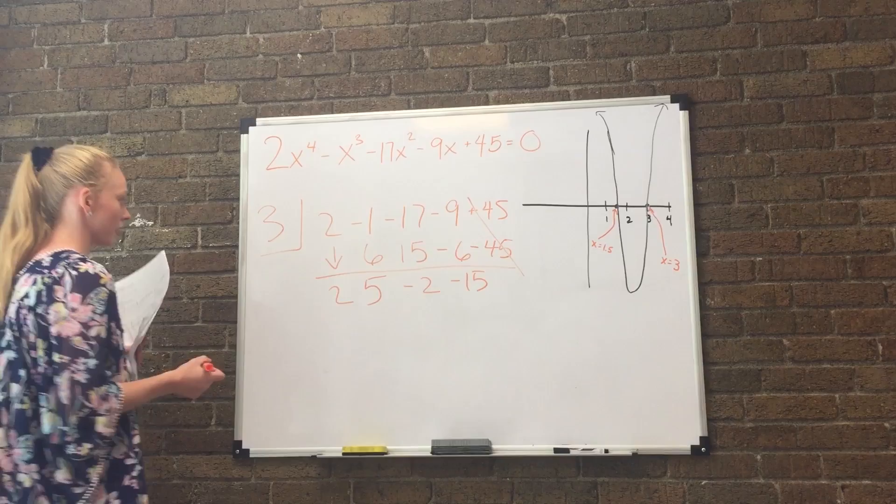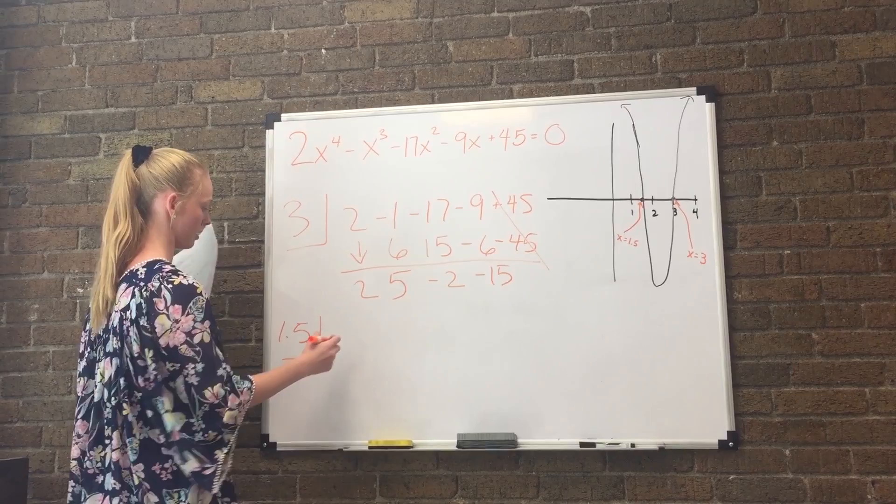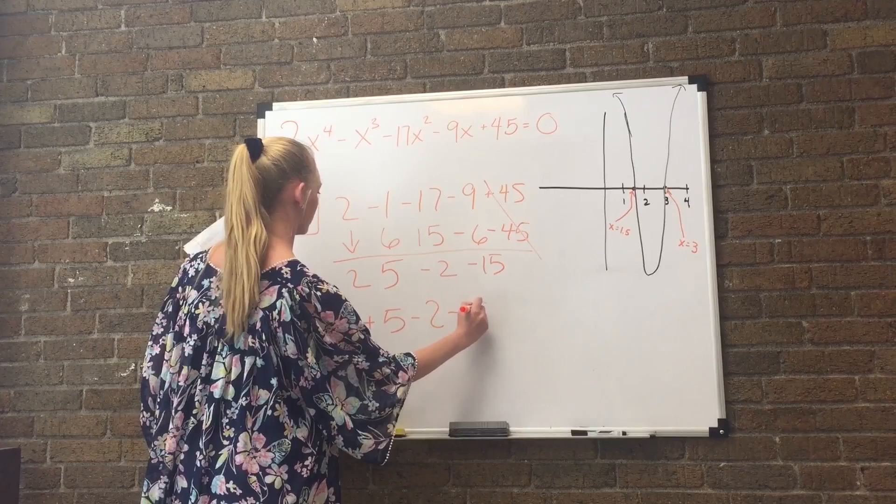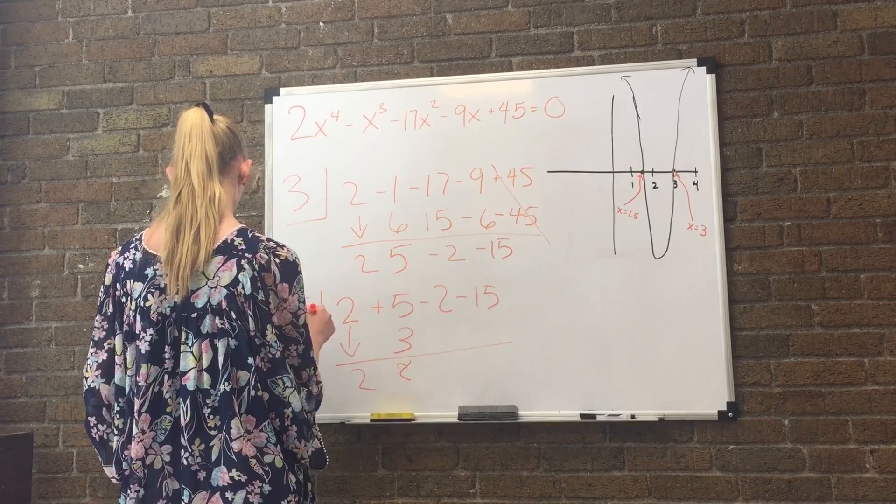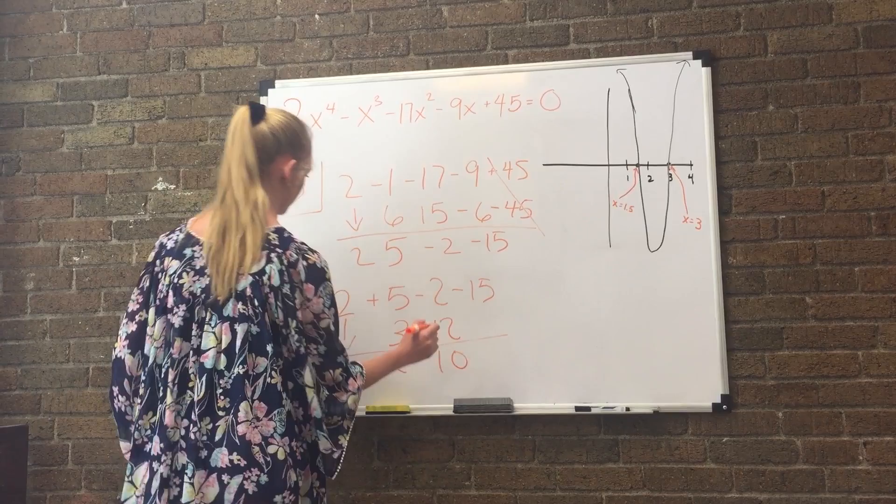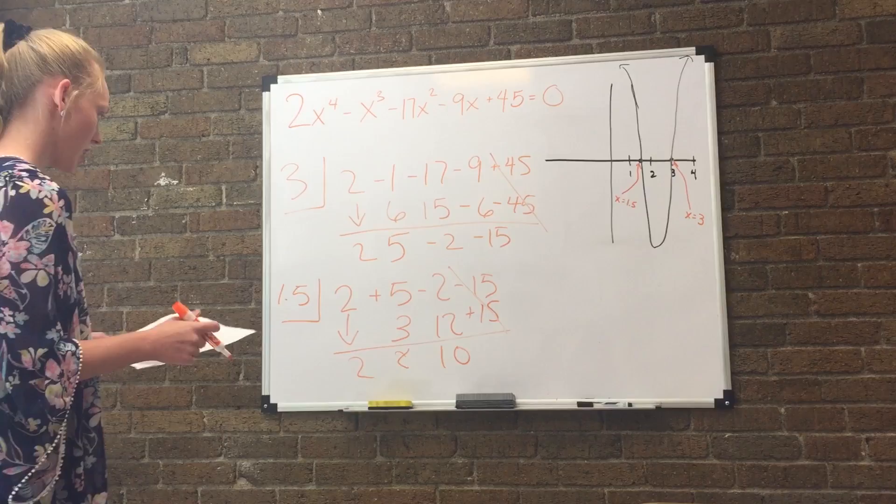From there, you take 1.5 and you take these numbers and bring them down. So it's 2, 5, negative 2, and negative 15. And you bring down the 2. You multiply 2 and 1.5, which is 3. 5 plus 3 is 8. 8 times 1.5 is 12. 12 minus 2 is 10. 10 times 1.5 is 15. 15 cancels out.